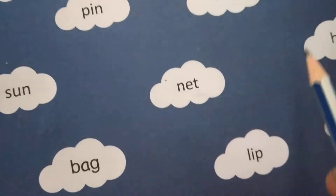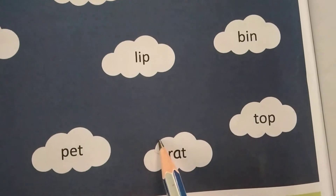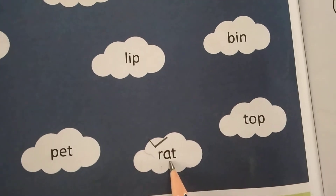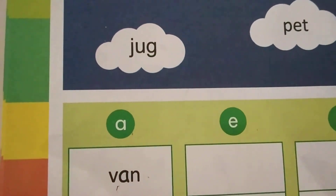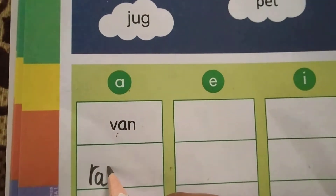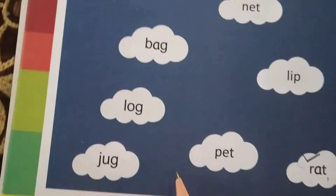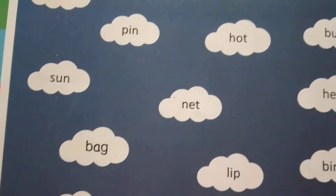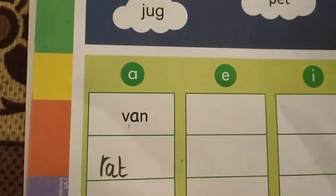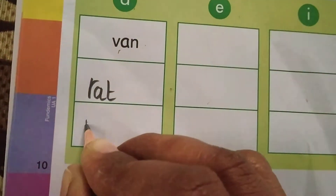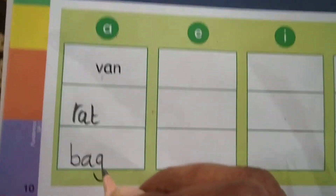Find one more word. A, A, A — R, A, T — rat. A is there. So write R, A, T — rat. Completed. Find one more word here. See, here it is. Write here: B, A, G — bag.